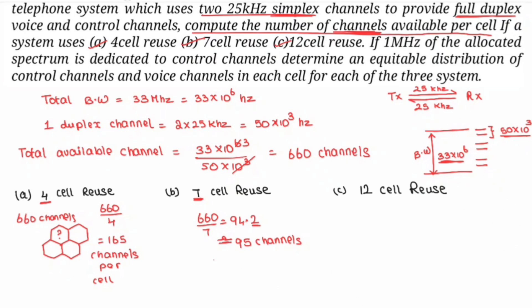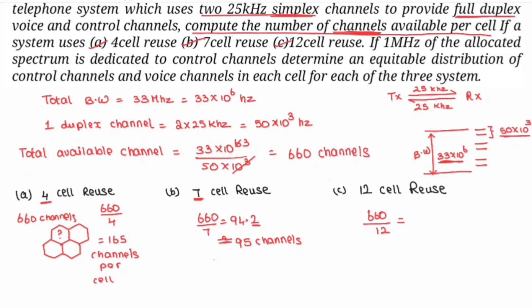Now for 12-cell reuse: 660 divided by 12 gives us 55 channels per cell. This is the straightforward calculation. We'll now move on to the next part of the question.